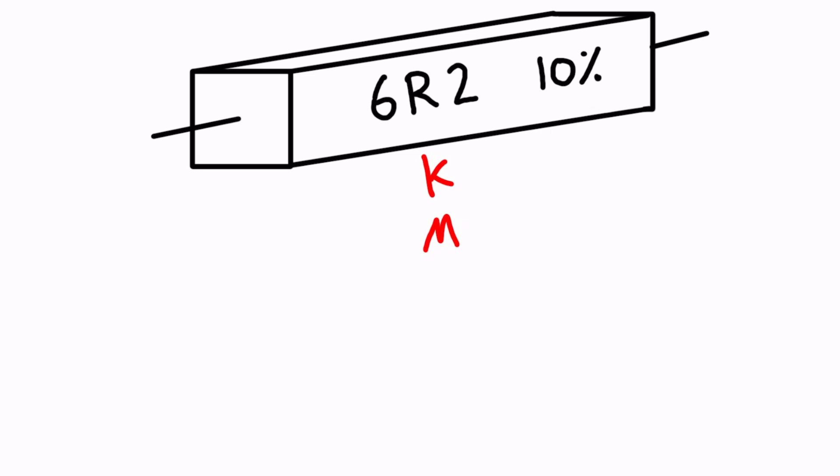Now R is going to refer to a multiplier of 1, K is a multiplier of a thousand, and M is a multiplier of 10 to the 6 or a million. And the position of the letter, you're going to see a few different variations in a second, is going to indicate the position of the decimal place surrounding the digits that it's interacting with.